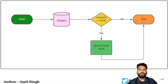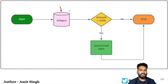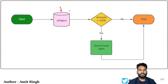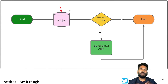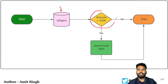We are going to create a record-triggered flow, which will be an after-save flow. If you remember our previous discussion about which flow to use — if we need to send an email, we use an after-save (after trigger) flow. We will check the condition where if the amount is greater than $100k, then we send the email alert; if not, we end the flow.